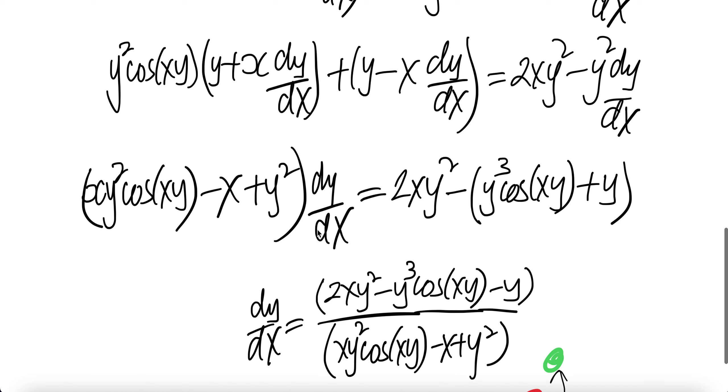Next is collect all the dy/dx. You have one here, so you'll be xy squared cos xy. Another one here minus x, and then another one here minus y squared. Bring across, you get plus y squared dy/dx.